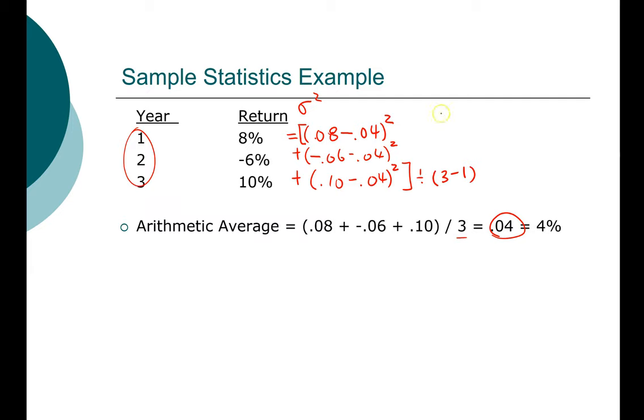The first term here then becomes 0.08 minus 0.04, which is 0.04 squared. The second term, we have minus 0.06 minus 0.04. Together we have minus 0.1, and we have to square that. And here we have 0.1 minus 0.04, that gives us 0.06. Again, we'll square that. And remember, all of it at the end will be divided by 2.